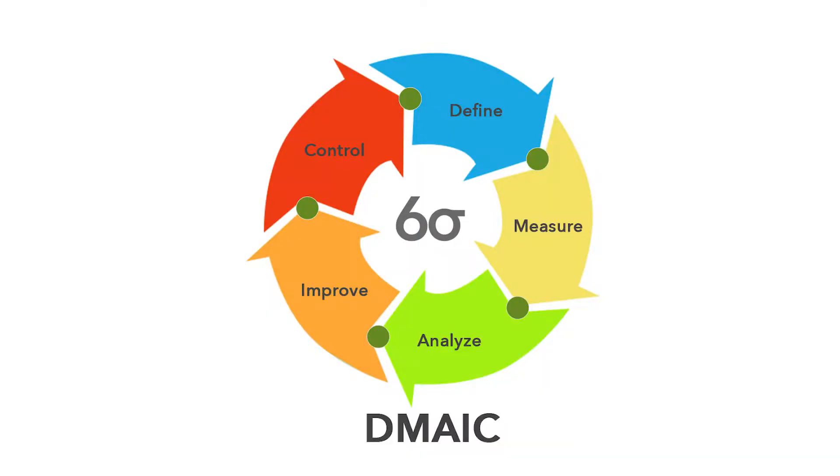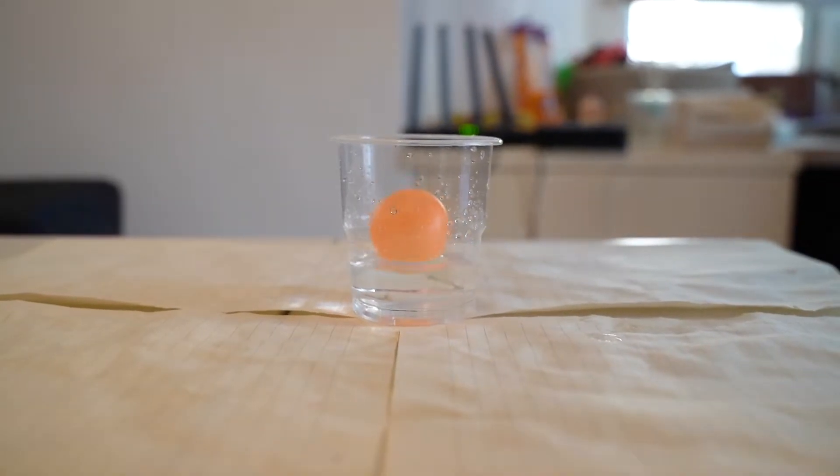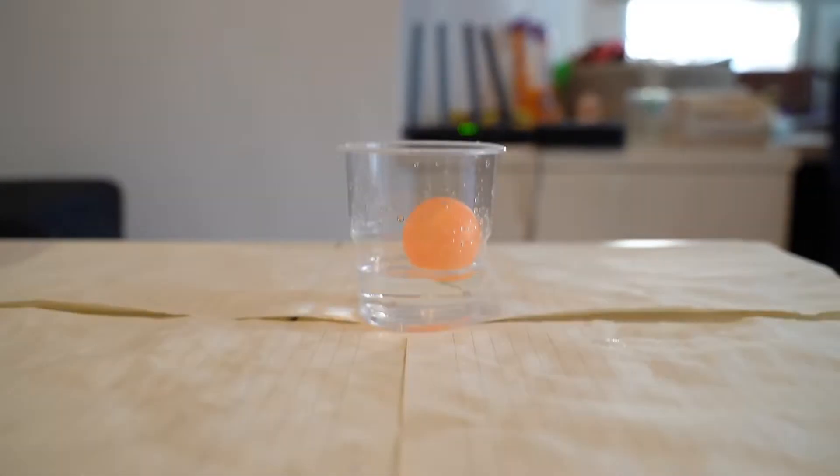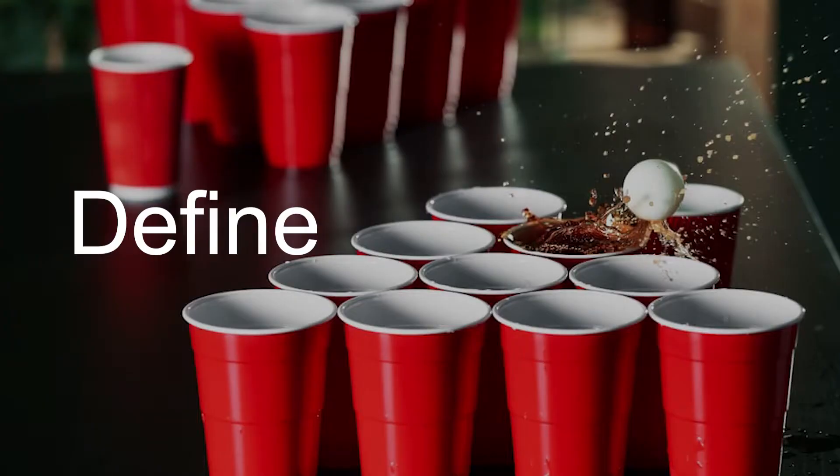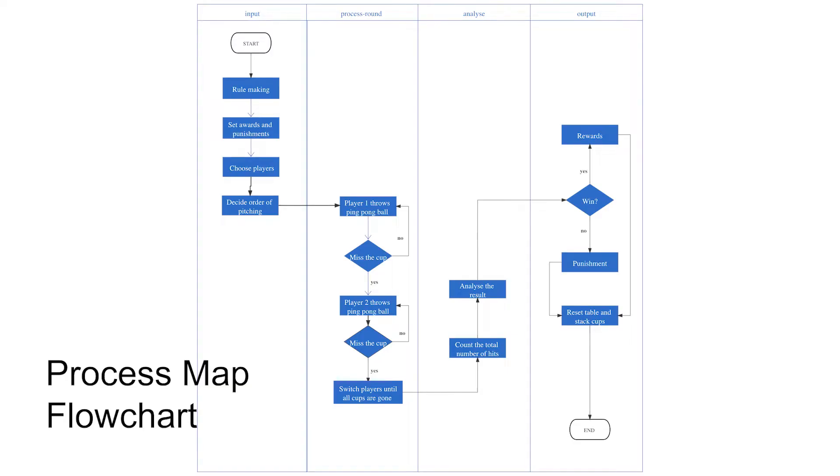And so she asks her classmates taking the Six Sigma class to apply the DMAIC methodology to see how we can increase the odds of throwing a ping pong ball into the cup. First, to define the problem, we drew up a process map to see the flow of how the beer pong game works.